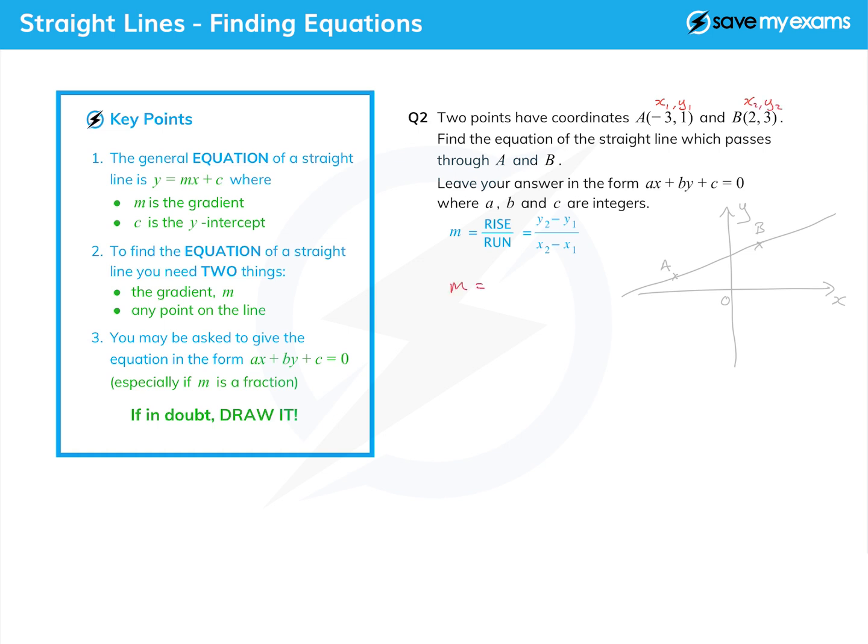So m equals 3 minus 1, that's y2 minus y1, and then making sure we go the same way, so we're doing B minus A here, that's 2 minus minus 3. Be careful with that extra minus sign.